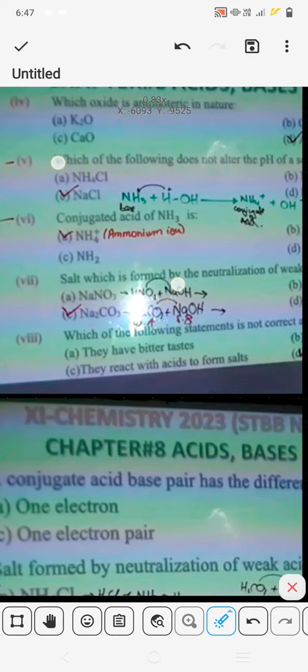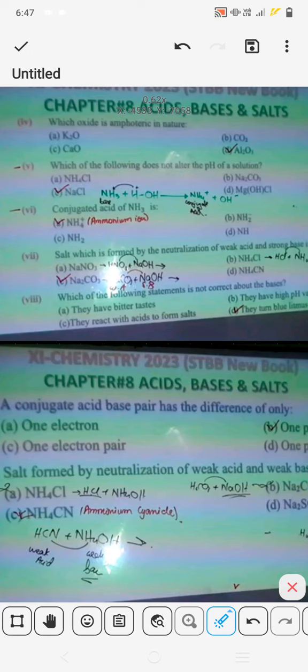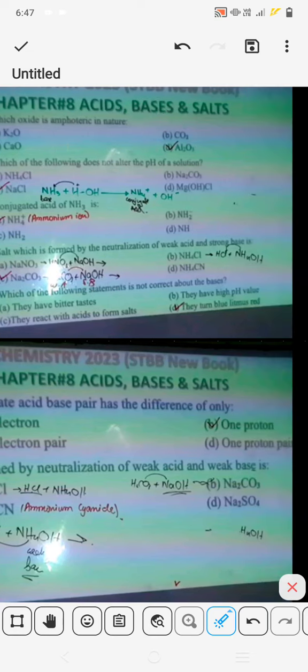Which of the following statement is not correct about bases? Bases have a bitter taste - yes. Bases react with acids to form salts - yes. They have high pH value - yes, 7 to 14, and acids have 1 to 7. They turn blue litmus to red - this answer is not correct because bases convert red litmus to blue.